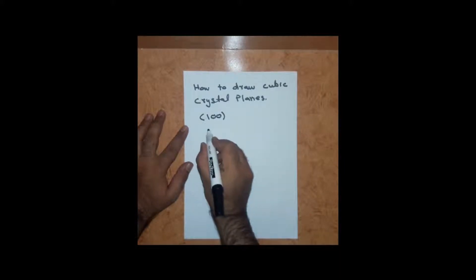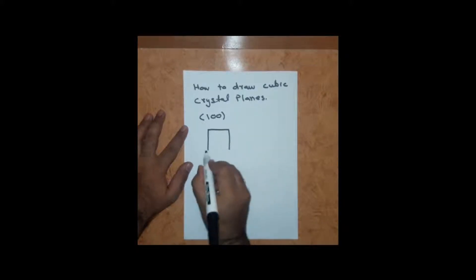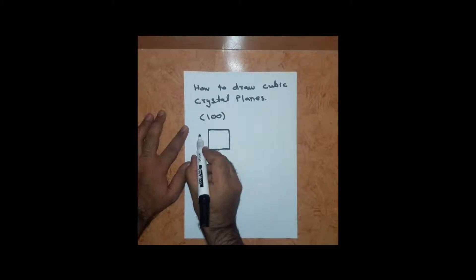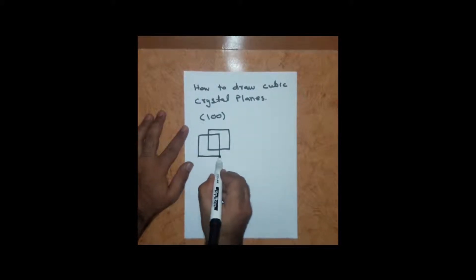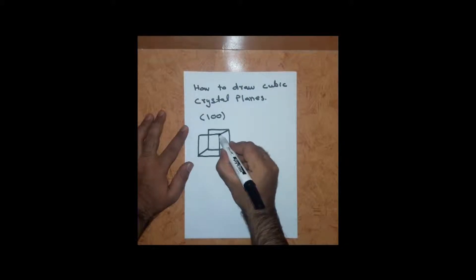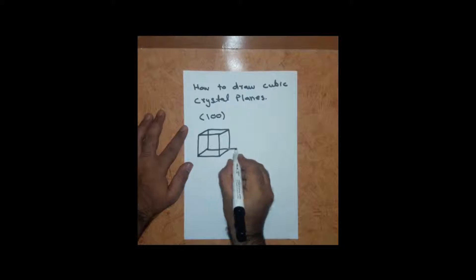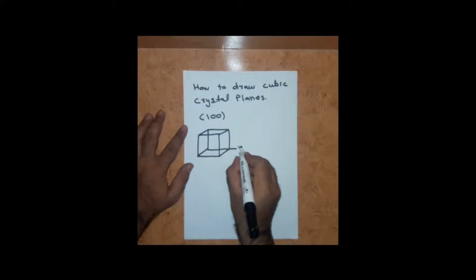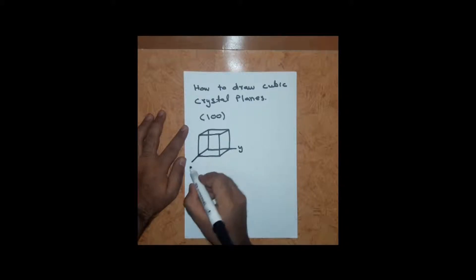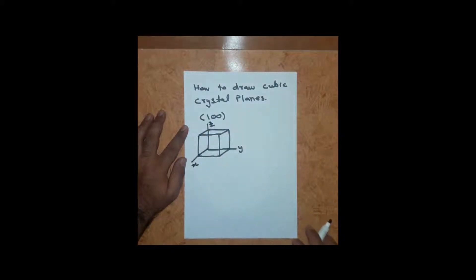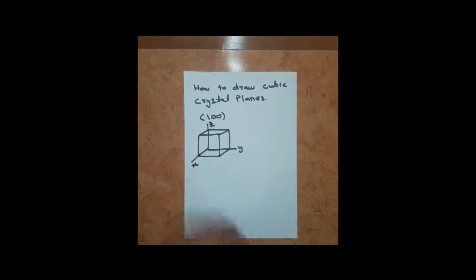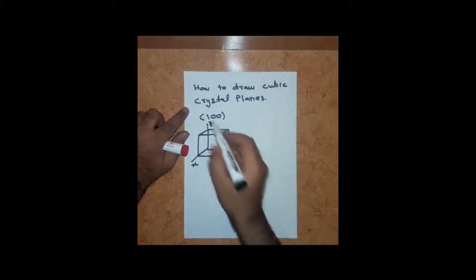Starting with drawing the unit cell of a cubic structure. Let's suppose this is the y-axis, this is your x-axis, and this is your z-axis. So we have to draw (100), meaning if we take the reciprocal of these Miller indices...